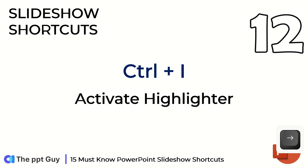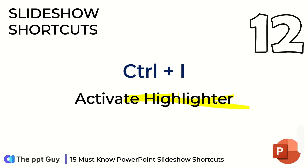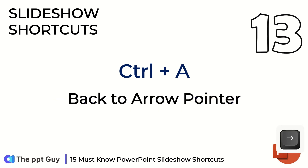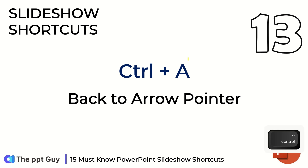You can also convert the arrow into a highlighter by pressing Ctrl I. You can highlight any part of the slide using a highlighter, which is our shortcut number 12. When you have changed the mouse pointer to different things, you need to bring it back to the arrow. Our 13th shortcut will do just that — just click Ctrl A.